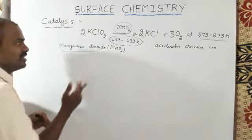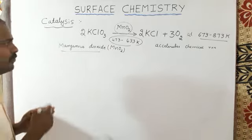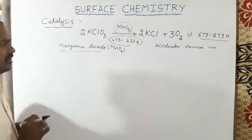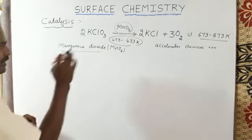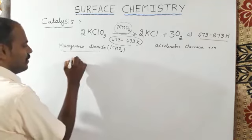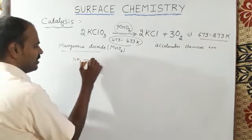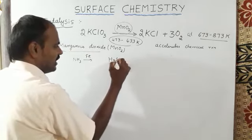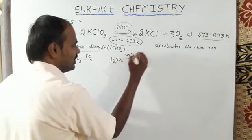Various foreign substances are added in every chemical reaction. For example, in the manufacture of ammonia, iron is used. In the manufacture of sulfuric acid, H2SO4, vanadium pentoxide is used.